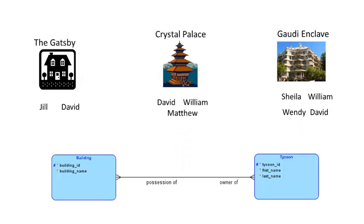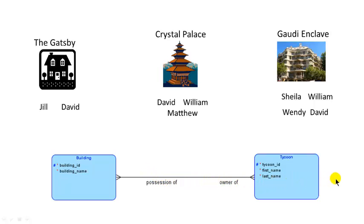So we can start by creating this many-to-many relationship. I've created an entity type called Building and another called Tycoon, with some attributes. Building ID is the primary key for Building; Tycoon ID is the primary key for Tycoon. It's a many-to-many relationship because one building can be the possession of many tycoons, and one tycoon could be the owner of several buildings. I've taken the trouble to give these things meaningful names.